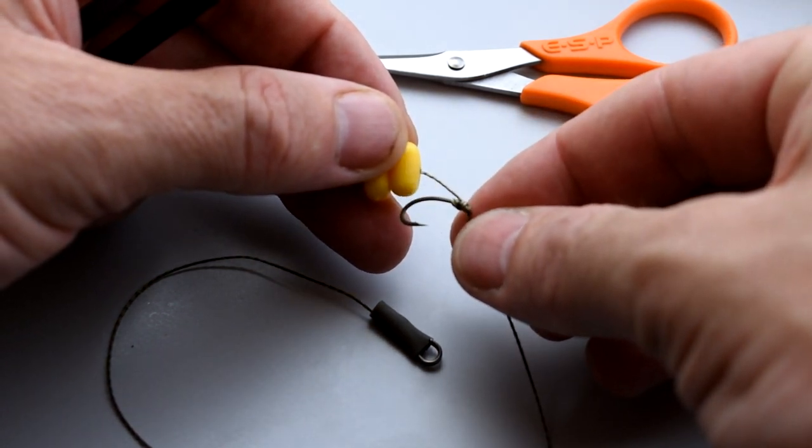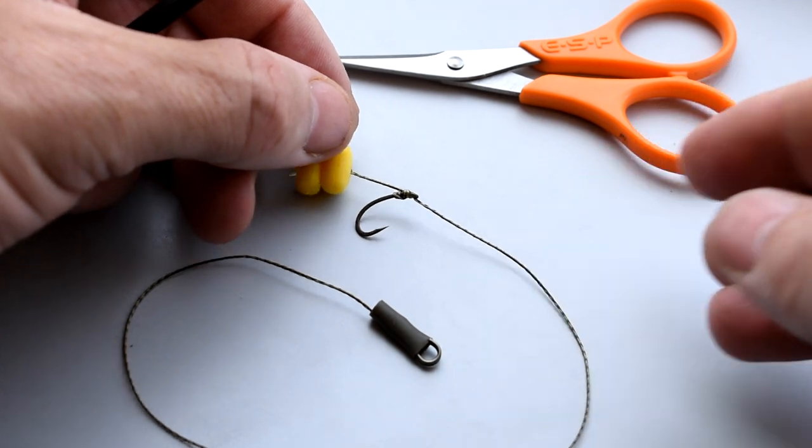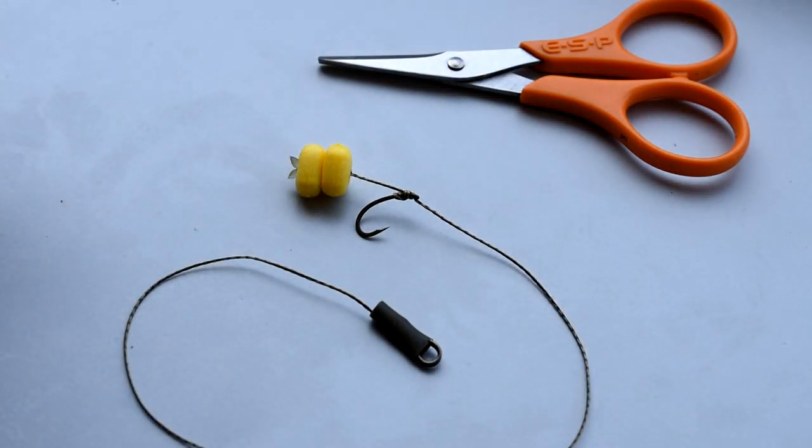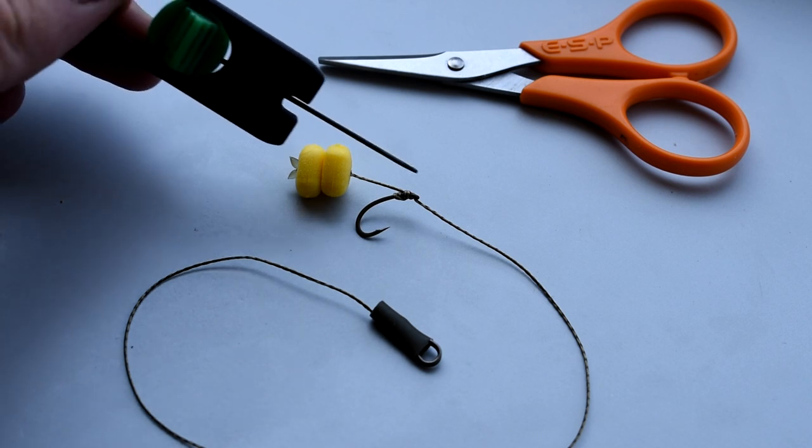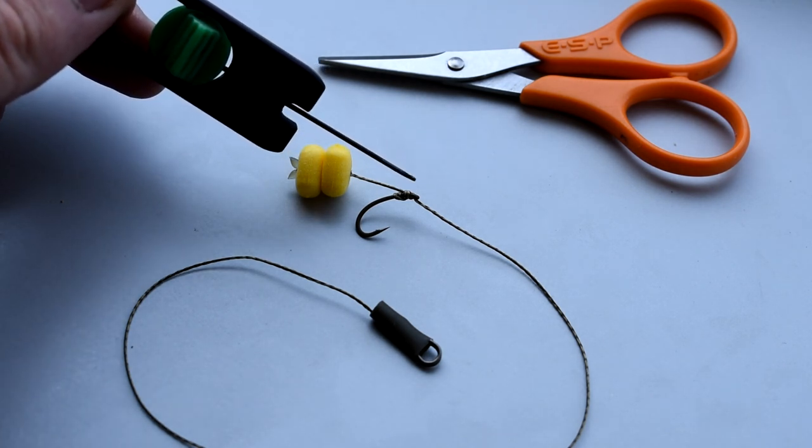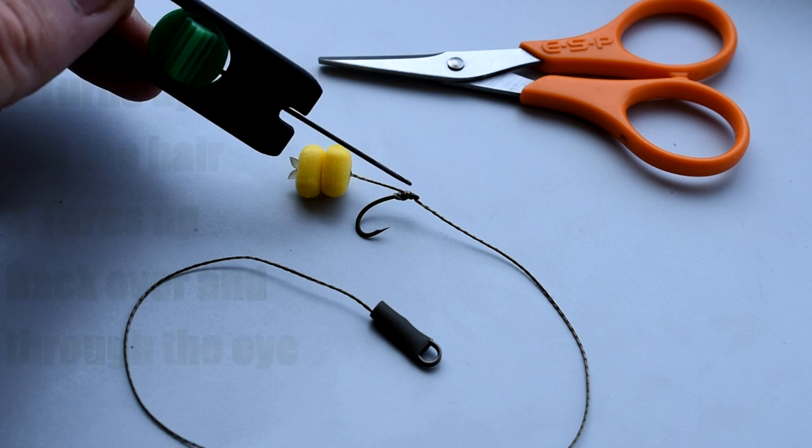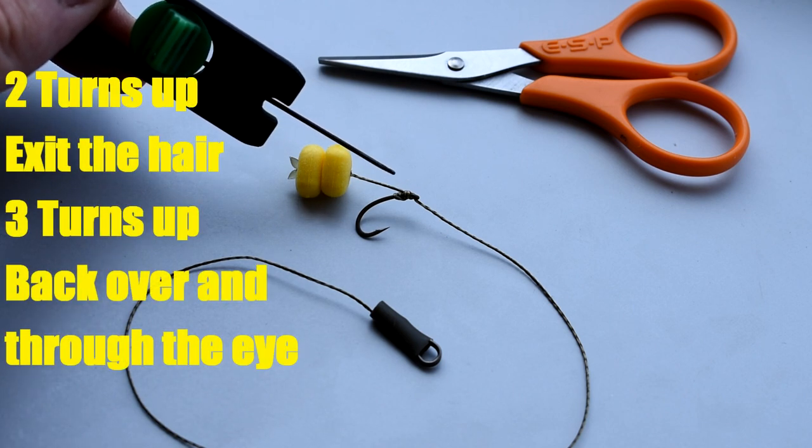It's a standard KD rig with two pop-up grains of corn to tie it with. I've come with a knotless knot, two turns up and exited the hair, then carried on another three times and gone back over, round and through again.